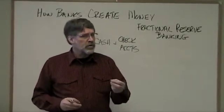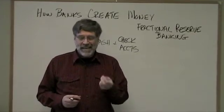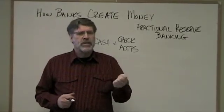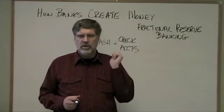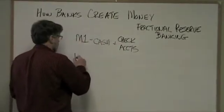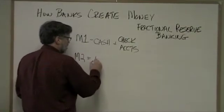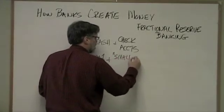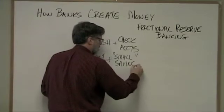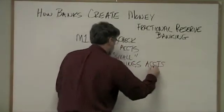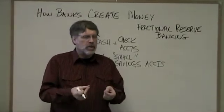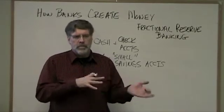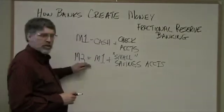Currency in circulation, but also money that you and I have in our checking account, counts as money — because with ATM debit cards and checks and so on, that's as good as having cash in our hands. So money in circulation includes both of those things. M2 is a slightly broader definition: it equals M1 plus some small savings accounts. These savings accounts aren't quite as liquid as cash or a checking account, but it's pretty easy to transfer monies and use them. So M2 is just a little bit broader definition.